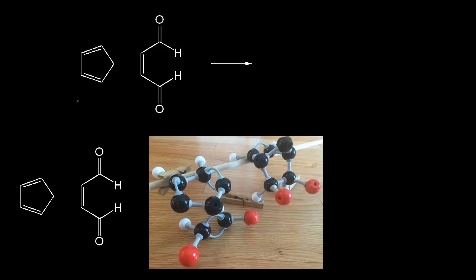On the left is our diene. This is cyclopentadiene, and we have this bridging CH2 to think about. On the right is our dienophile, and we have these two aldehydes that are cis to each other. In this video, we have stereochemistry for the diene and the dienophile, and we're also going to talk about the endo and exo products.